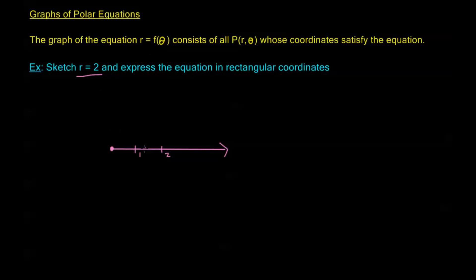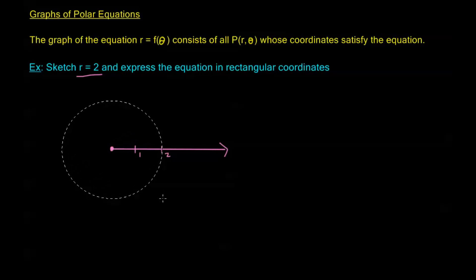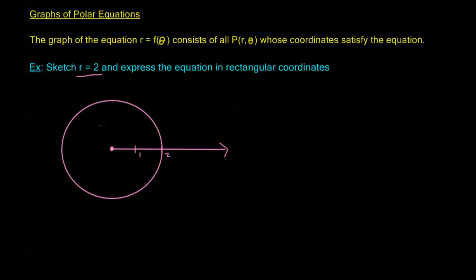So I'm looking at a circle — a circle of radius 2 centered at the origin — and all of the points along this circle have an r equals 2. Any point inside the circle has an r less than 2, and any point outside the circle has an r greater than 2. So these are all of the points that satisfy r equals 2.